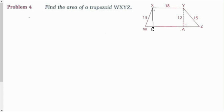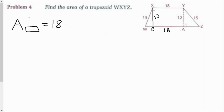Finding the area of the rectangle first: length XY is 18, which means length EA is also 18. The altitude XE equals YA, which is 12. So the area of this rectangle is 18 times 12, which is 216 square units.